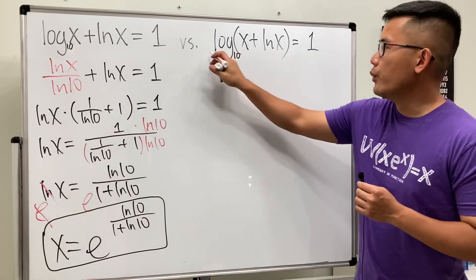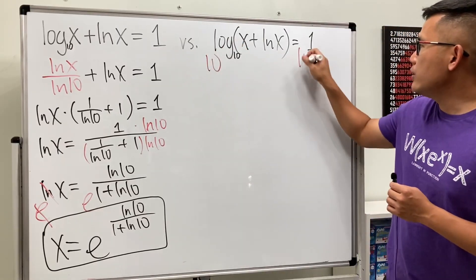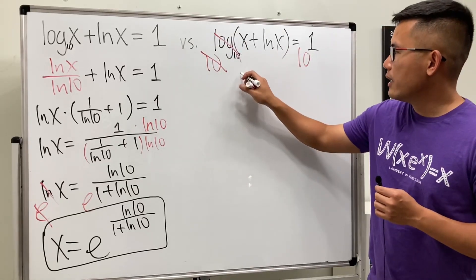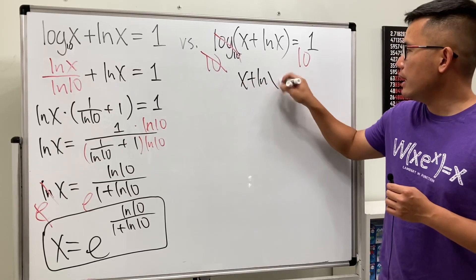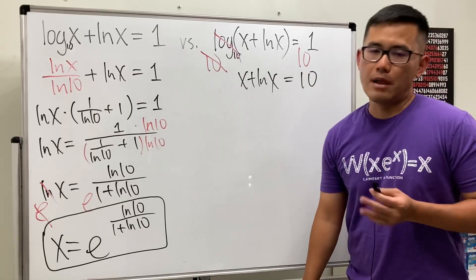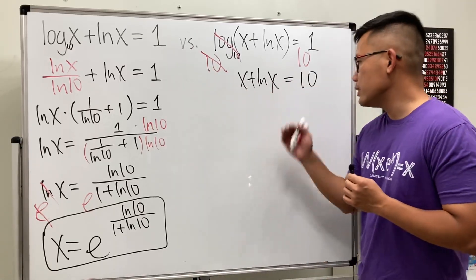So let's get rid of this log base 10 first. And to do so, we do 10 to this power and 10 to this power so that this and that can be canceled. And then, we will get x plus ln x, and that's equal to 10 to the first power, which is just 10. Now, what though? We have x plus ln x is equal to 10.